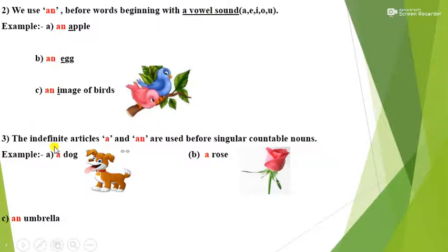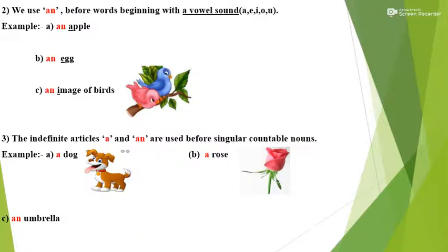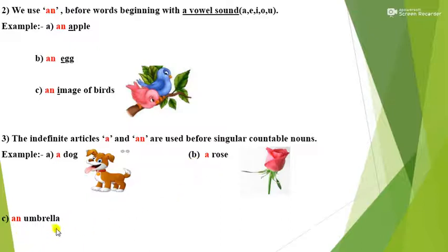Point number 3: the indefinite articles A and An are used before singular countable nouns. Students, you know what is the meaning of countable nouns — the noun which we can count. Point number 4 example: A dog — how many dogs are here? Only one dog, that is why we have written 'a dog', and we can count how many dogs there are. Number B: a rose. Number C: an umbrella.